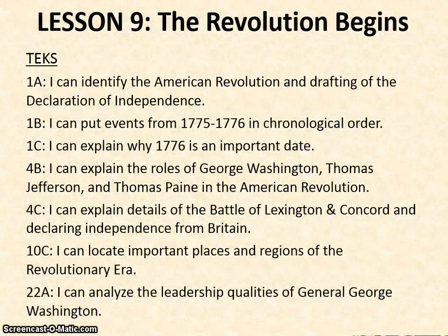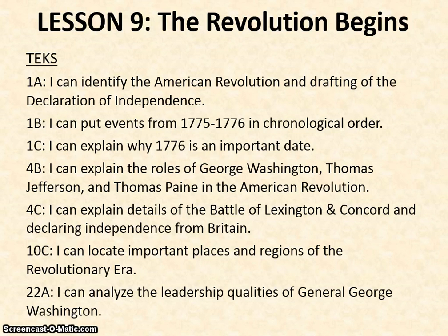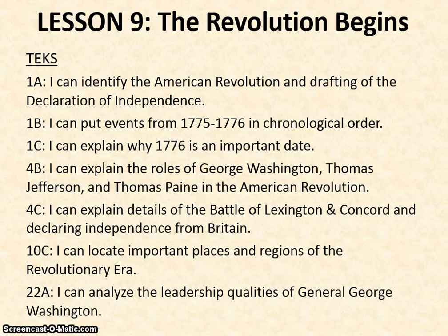We start with Lesson 9: The Revolution Begins. We have a number of learning objectives to identify the American Revolution and the drafting of the Declaration of Independence. In this lesson we're going to look at events from 1775 to 1776, explain why 1776 is a really important date in American history, look at the roles of George Washington, Thomas Jefferson, and Thomas Paine, explain details of battles — particularly the Battle of Lexington and Concord — and analyze the leadership qualities of General George Washington.